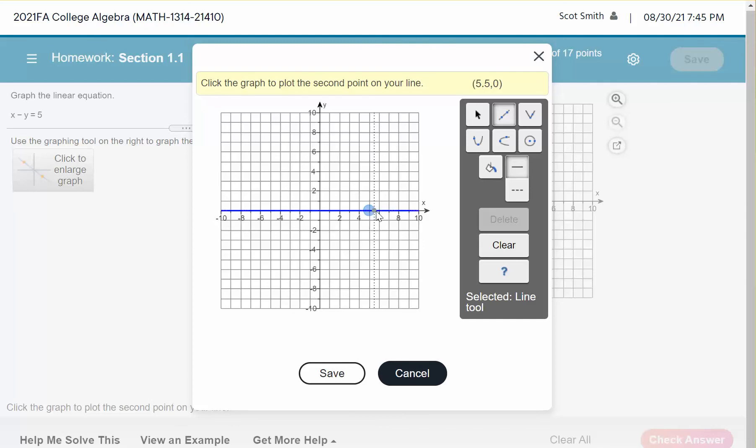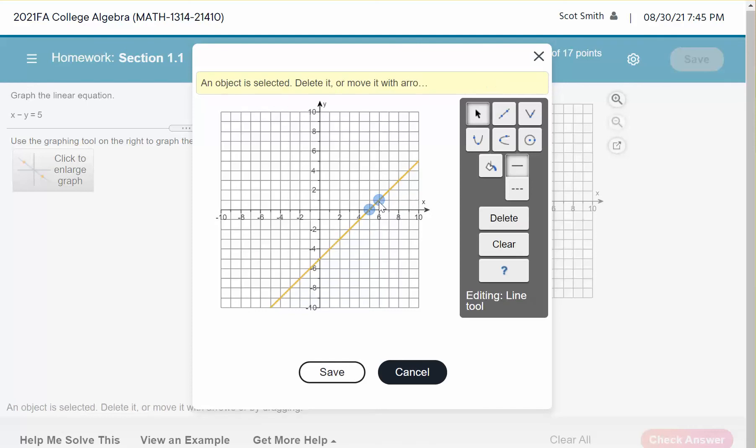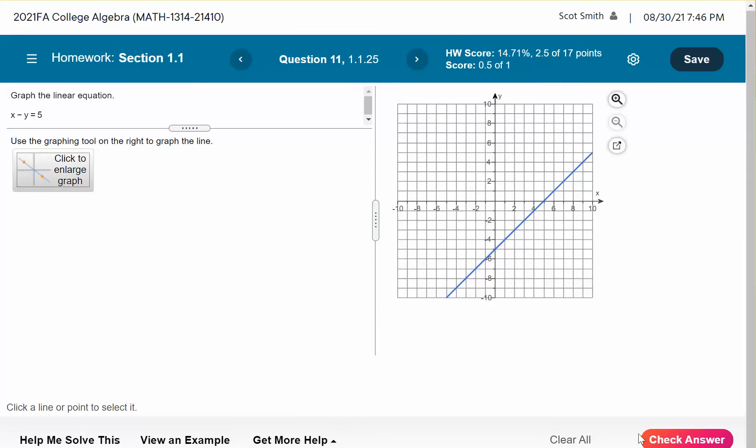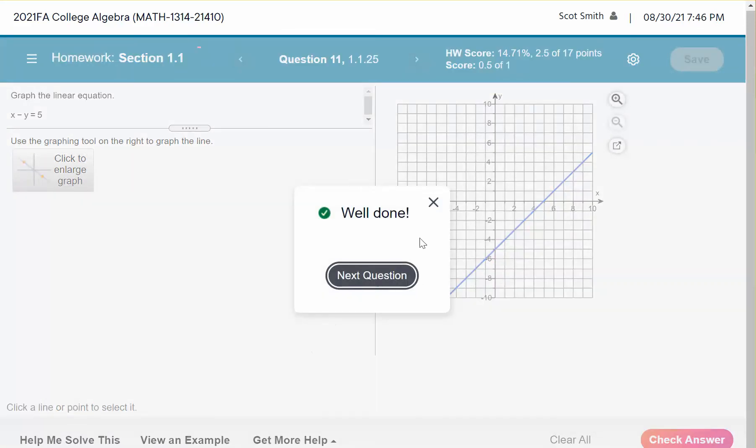And then I need to go to 6, 1. So 6 and up 1. And again, you can see in the yellow that I'm at the point 6, 1, until you click on it. So we're going to save that. We're going to check our answer, and we're done.